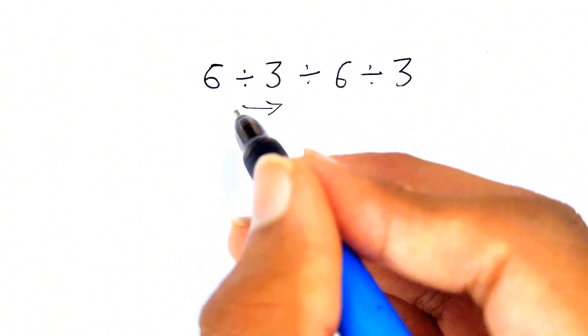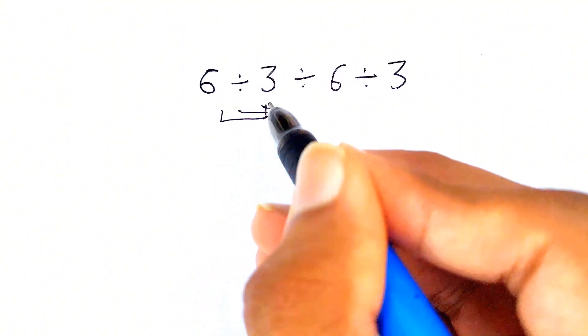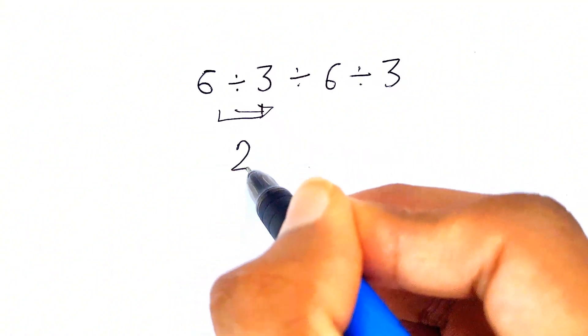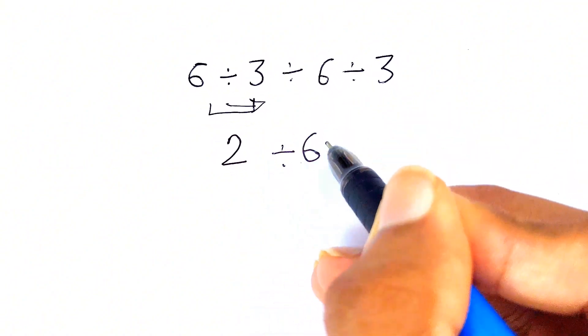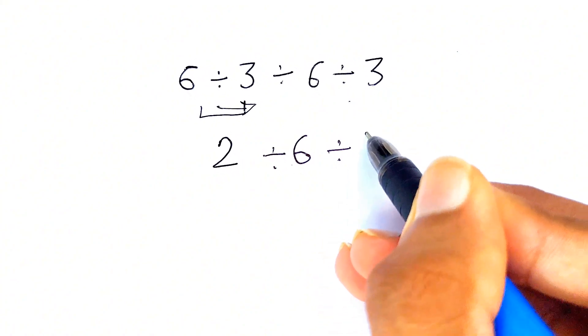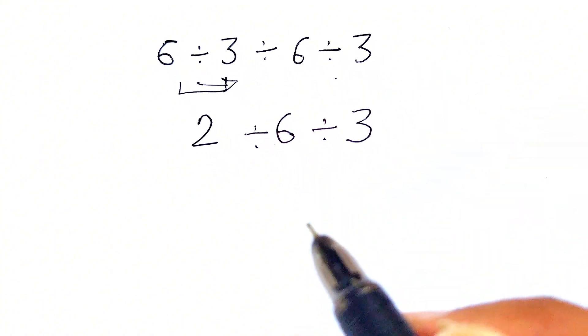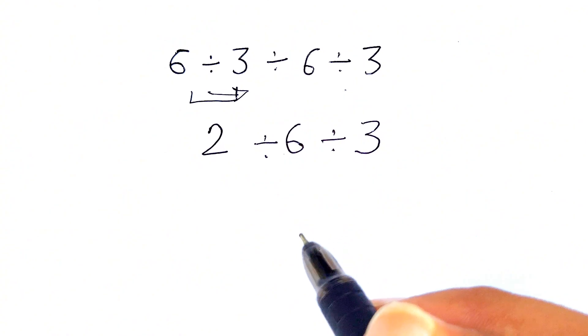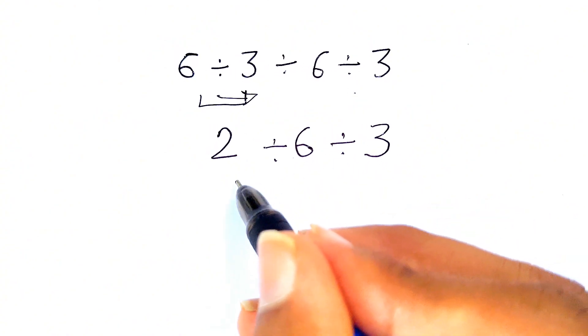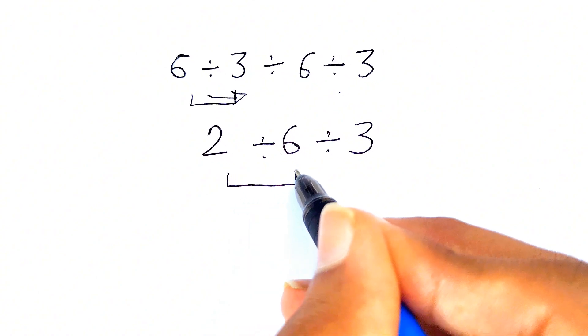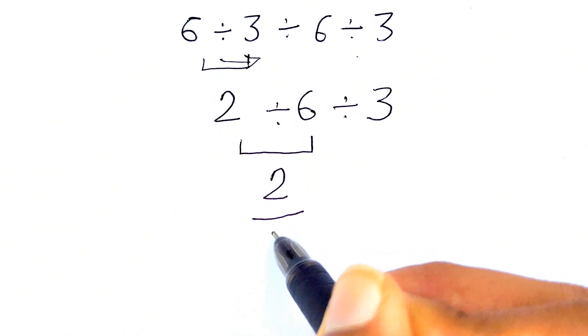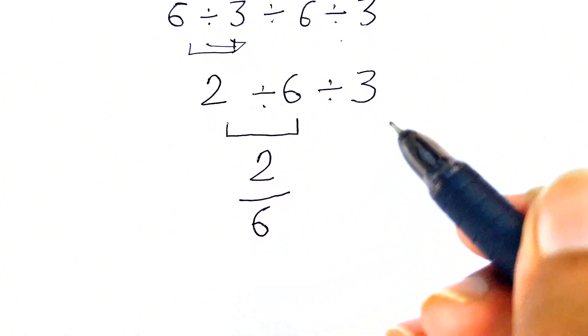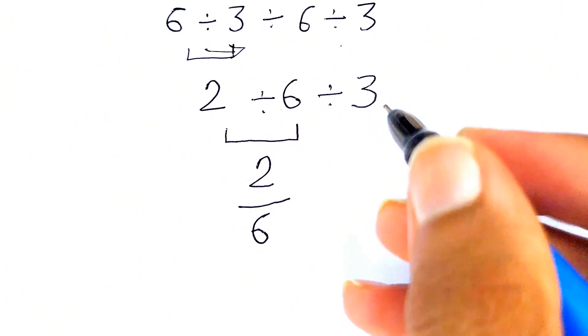By solving this expression left to right, first we need to solve 6 divided by 3 that gives us 2. Then we rewrite the expression again: 2 divided by 6 divided by 3. Now here again we need to go from left to right, so we need to solve 2 divided by 6. 2 divided by 6 can be written as 2 over 6, and now we'll write this remaining divided by 3 as it is.